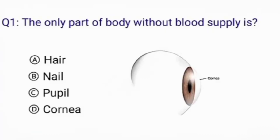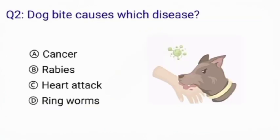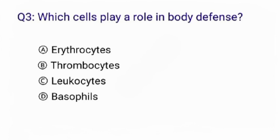Hello everyone, welcome to Nursing Online Education. The only part of the body without blood supply is — the correct answer is option D: cornea. Dog bite causes which disease? The correct answer is option B: rabies.